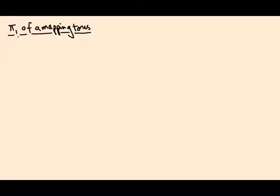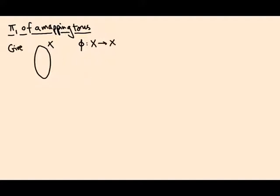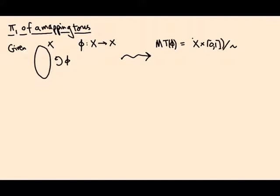In this video I want to explain how to compute the fundamental group of a certain class of spaces called mapping tori. Given some data, we can form a new space called the mapping torus, which is defined as follows: you take X and multiply it by the interval, then divide out by an equivalence relation where the points (x, 0) are equivalent to the points (φ(x), 1).